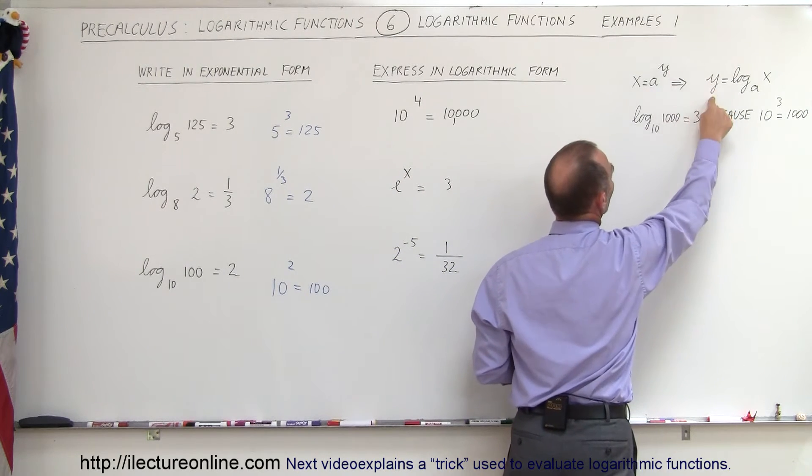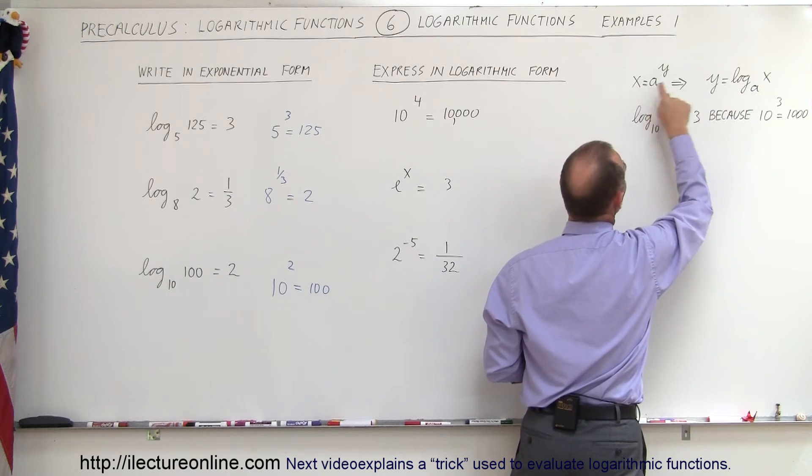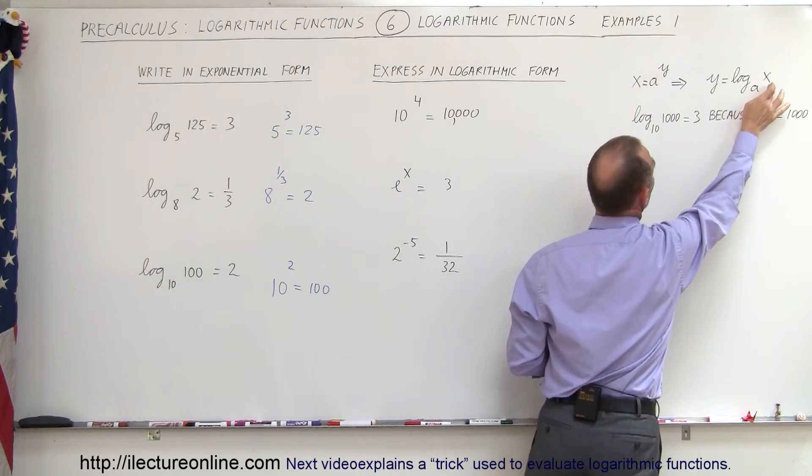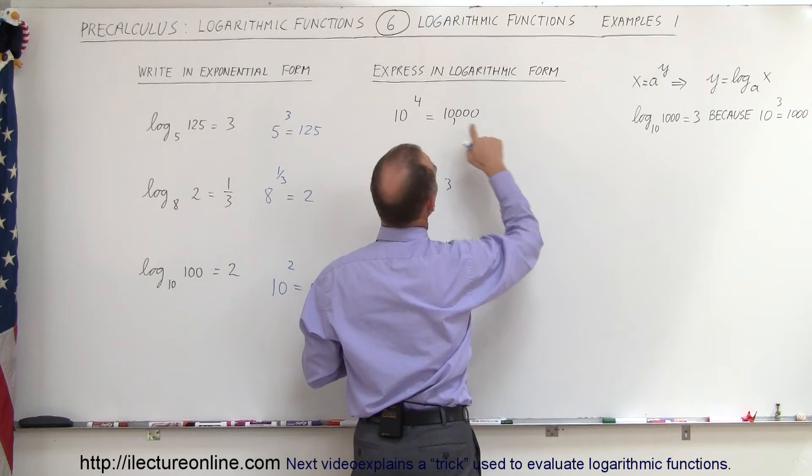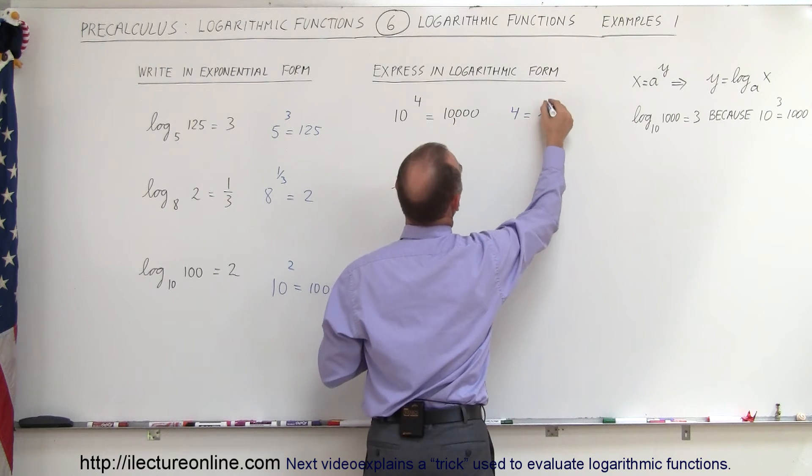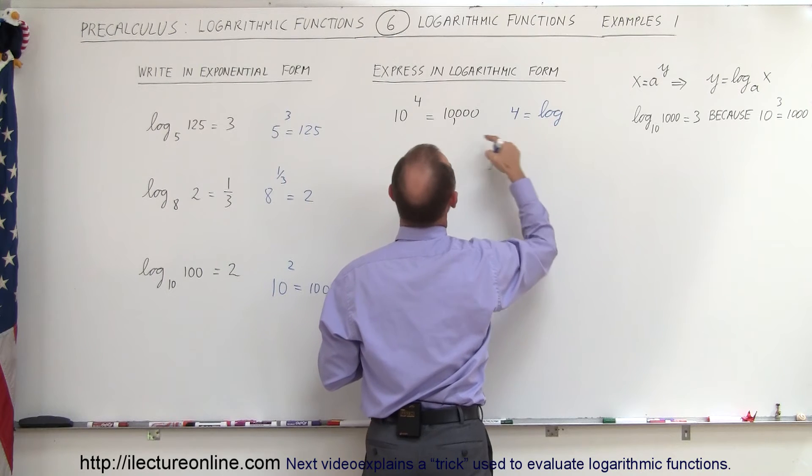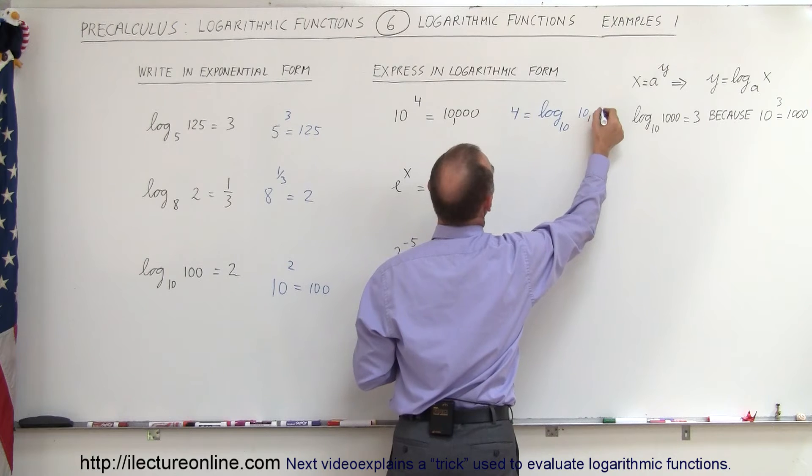So the exponent becomes the dependent variable, the base becomes the base of the logarithm, and then x becomes what the logarithm operates on. So in this case what we have here is the exponent becomes 4 equals log to the base 10 of 10,000.